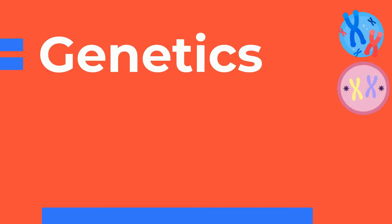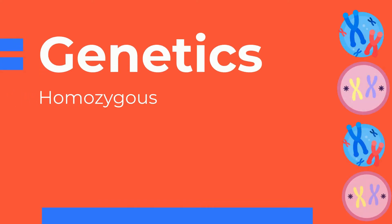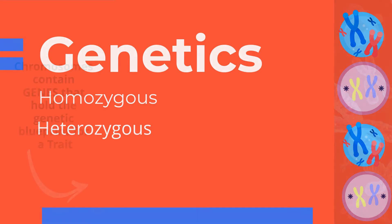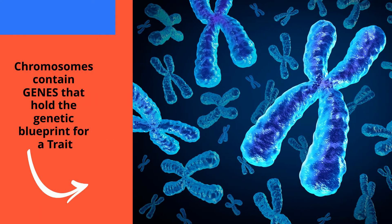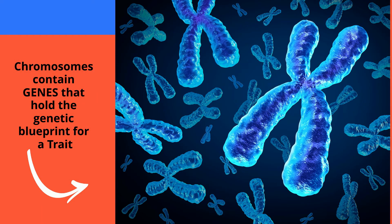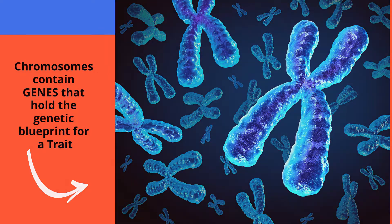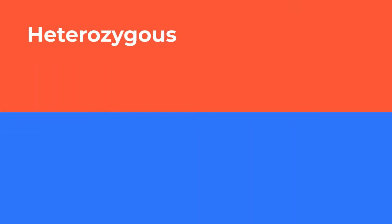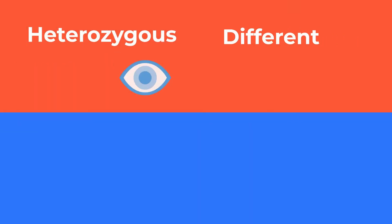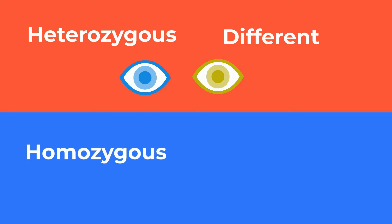In genetics, the terms homozygous and heterozygous are used to describe the genetic makeup of an organism. Let's first break down the terms. The term heterozygous means two things are different or distinct from one another. The term homozygous means that they are the same.